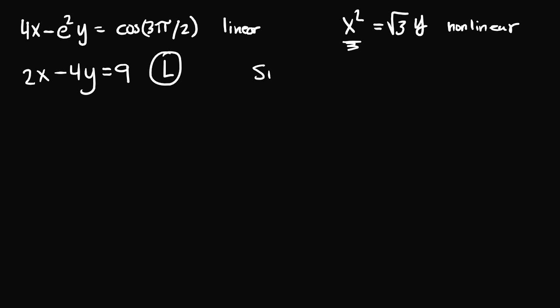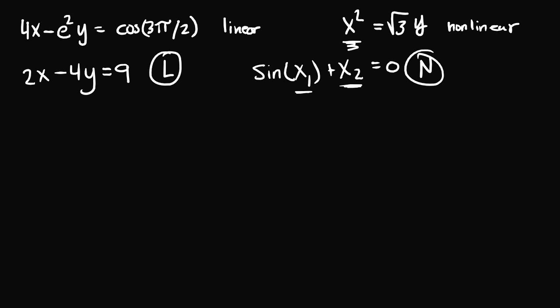Let's say we had something like sine of x1 plus x2 is equal to 0. In this case, we have two unknown variables, x1 and x2. x2 is okay, but x1 is part of a trigonometric function, so therefore this equation is not linear. What if we had 1/2 y minus π is equal to square root of 3? We have π and a root, but y is just multiplied with a constant, it's not raised to any other power, and it's not involved in any logarithmic, exponential, or trigonometric function, so this is a linear equation.